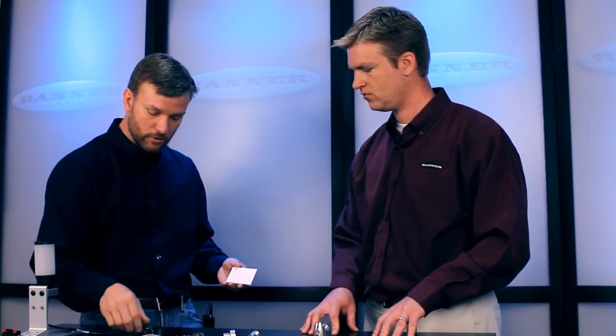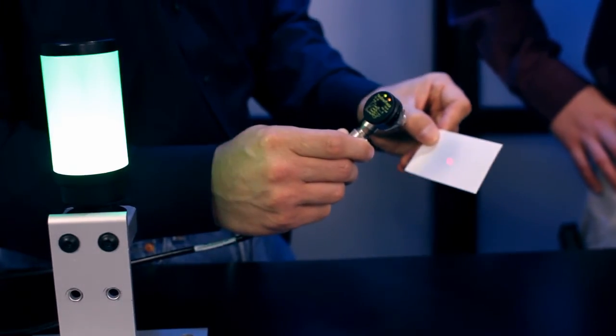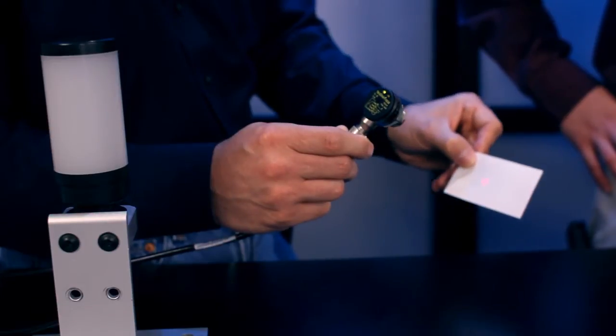And as you see on this opposed mode pair, a very bright visible spot. And we were able to also incorporate a visible red spot into our background suppression sensor, which is a 100 millimeter background range.